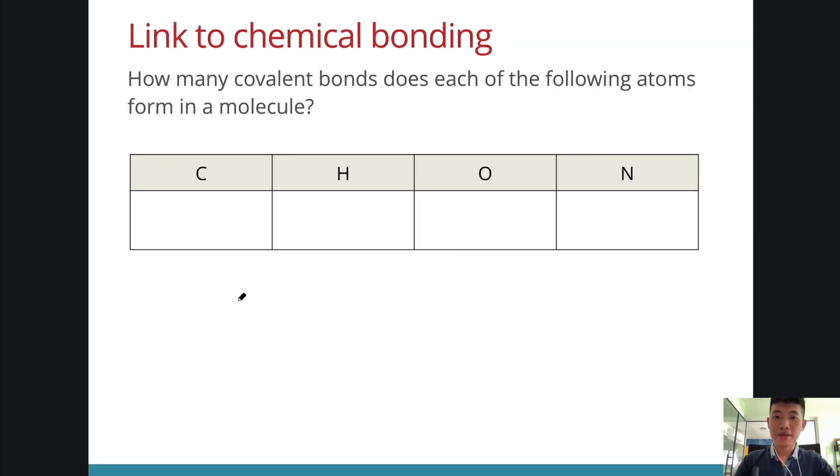Let's do a very quick recap on chemical bonding. Many of the organic compounds will contain the following elements. I would like you all to consider the electronic configuration and tell me how many covalent bonds each of these elements form. Here are the electronic configurations. We can see that the number of bonds that they form is the number of electrons they need to have a fully filled valent shell. So carbon will form four bonds, hydrogen 1, oxygen 2, and nitrogen 3. And this number of bonds is important when we draw the structure of molecules later on.